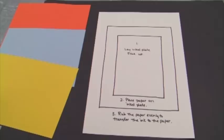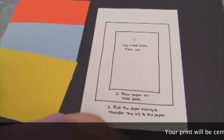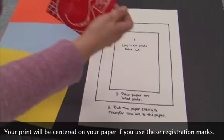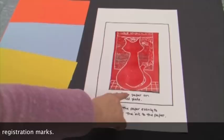Now we have paper, and this is the registration paper I've made for you. Number one, it says lay ink plate face up, so we're going to take the plate. It's right on that spot like that, and this is number two. Place your paper on your inked plate.